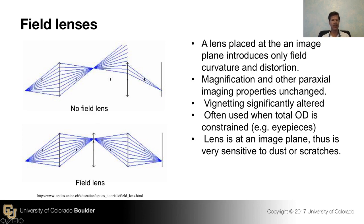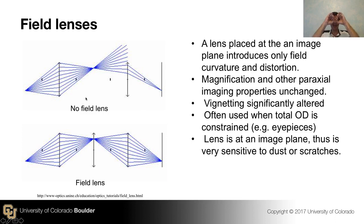All a field lens does is bend the rays, but it doesn't move them around. If you just bend these rays, this point source is still that point source. But what it does do, once the objects are of finite size, is it can dramatically change how those rays are clipped or vignetted through the optic. A really good example of this is binoculars — they need to be an imaging system that's pretty constrained, and they'll be much more usable if the tube is small.